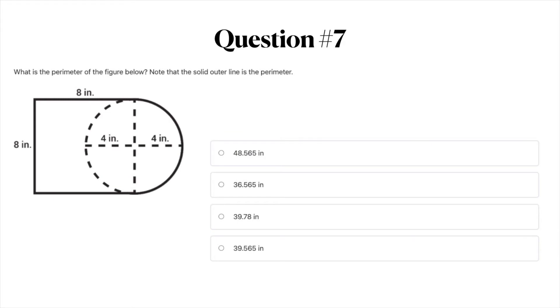Question number seven. What is the perimeter of the figure below? Note that the solid outer line is the perimeter. Your answer options are 48.565 inches, B, 36.565 inches, C, 39.78 inches, or D, 39.565 inches. Go ahead and take some time to look at this picture and you can pause the video here to work out this problem and when you're ready we will move ahead with the answers to these seven questions.